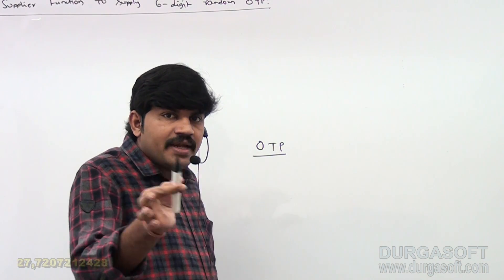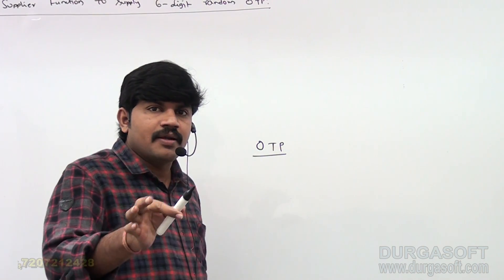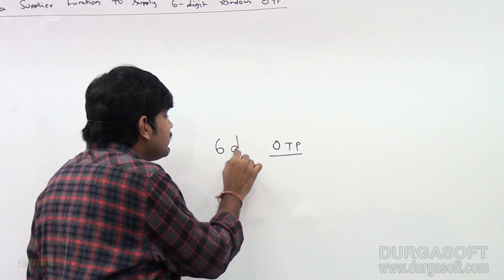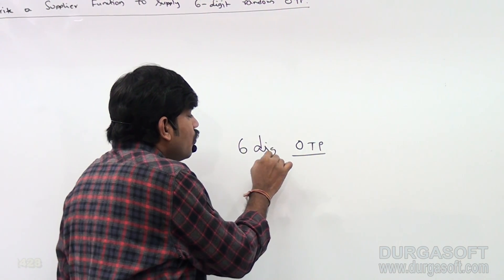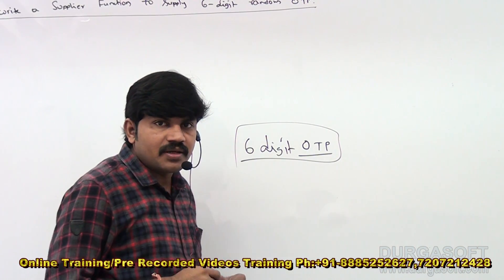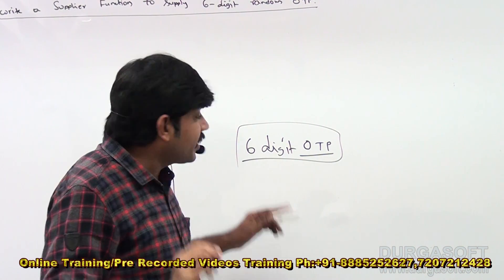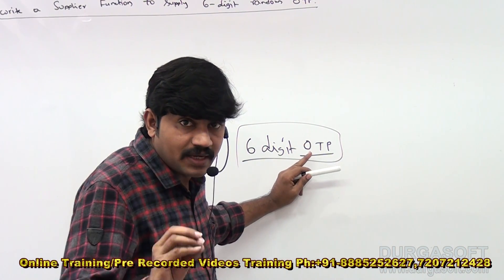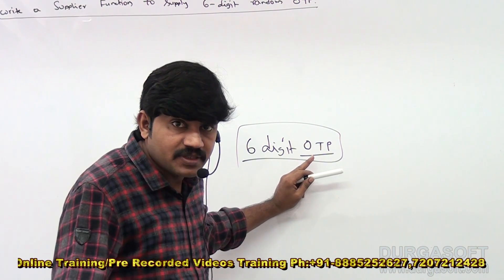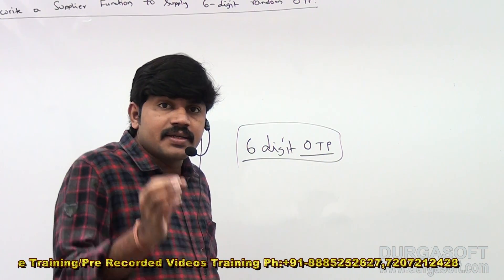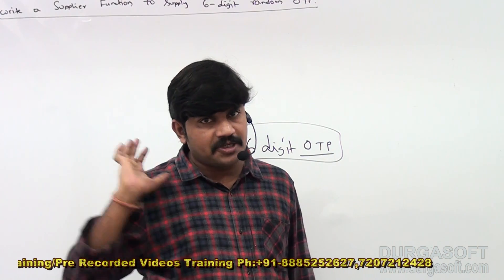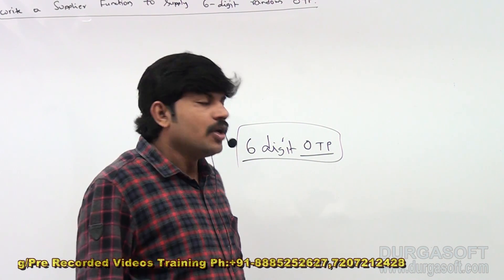I want to write a supplier — a lambda function, a supplier function — to generate a six-digit OTP. This is my requirement.